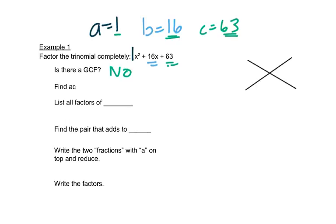Then we'll take a times c. So that's 1 times 63, and we get 63. We'll put that number up here. We're going to want to find two numbers that multiply to 63 and add to get this 16, this middle number. We'll put that down here. So this is our multiplication number, this is our addition number.